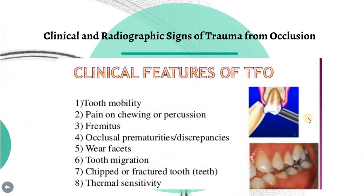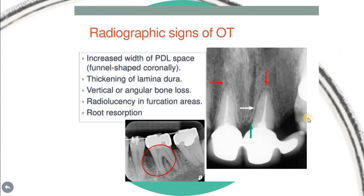Signs and symptoms: the clinical signs of trauma from occlusion include tooth mobility, pain on chewing or percussion, fremitus, occlusal discrepancies, wear facets, tooth migration, chipped or fractured teeth, and thermal sensitivity. Radiographic features include increased periodontal ligament space, increased number and width of the periodontal ligament, vertical bone loss, radiolucency in furcation areas, and root resorption.